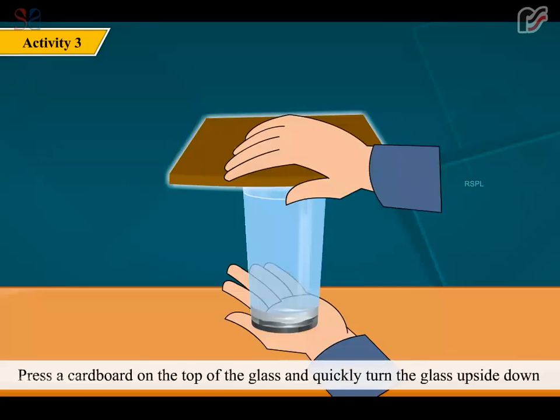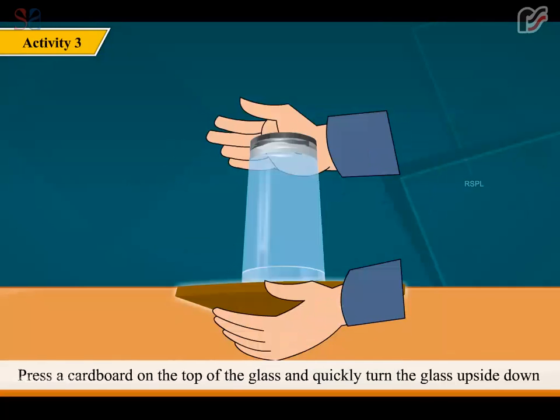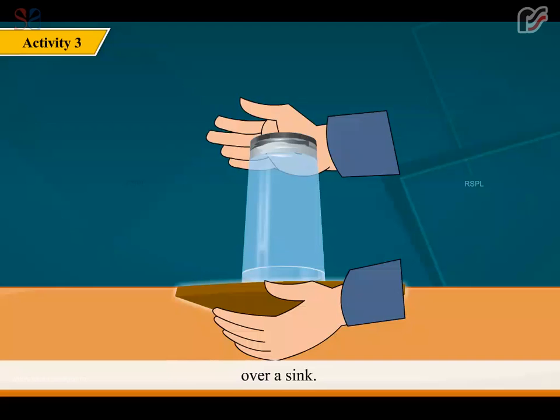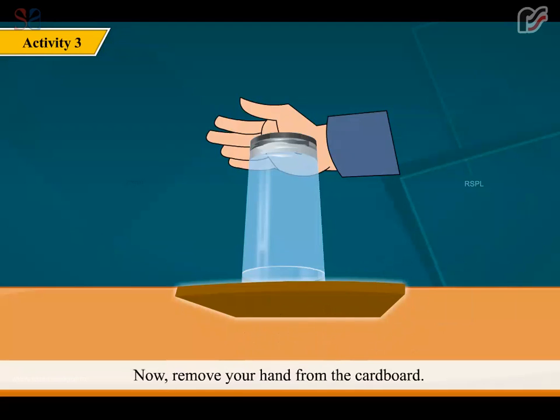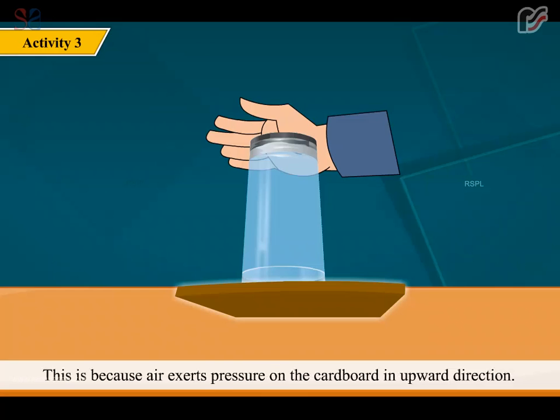Press a cardboard on the top of the glass and quickly turn the glass upside down over a sink. Now, remove your hand from the cardboard. What do you see? You will see that neither the cardboard nor the water falls down. Why? This is because air exerts pressure on the cardboard in upward direction. This proves that air exerts pressure.